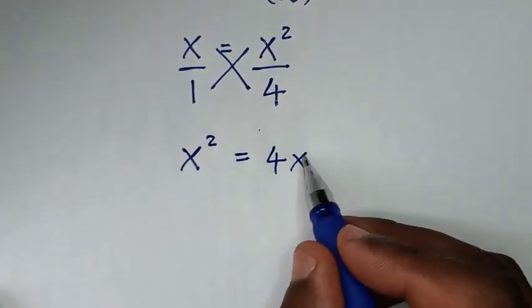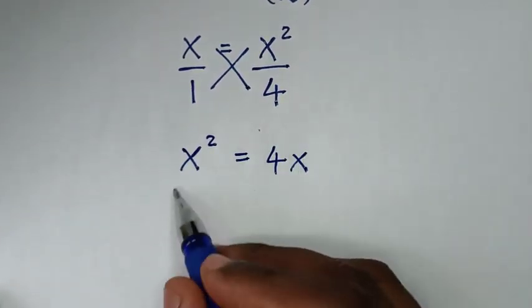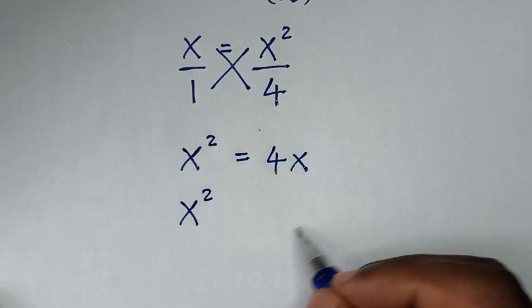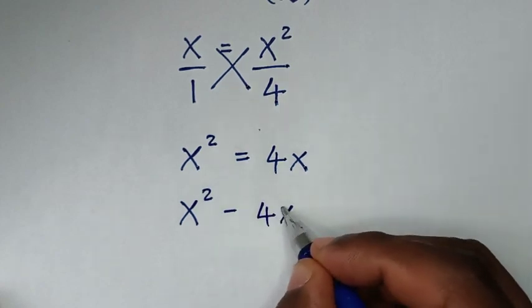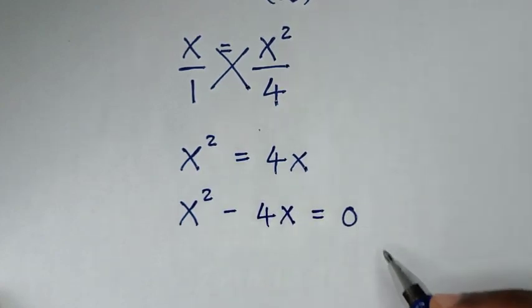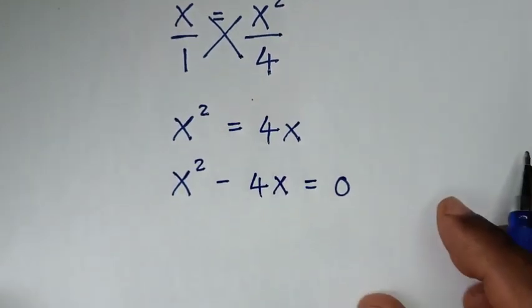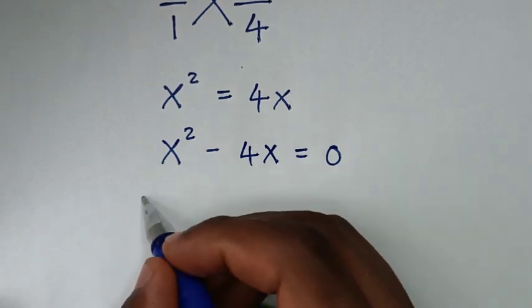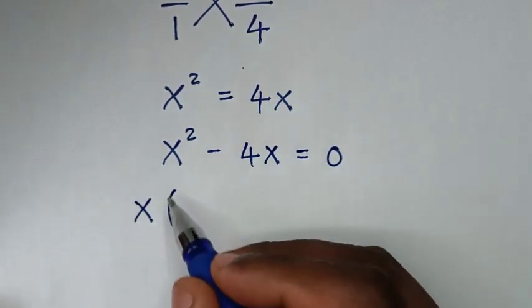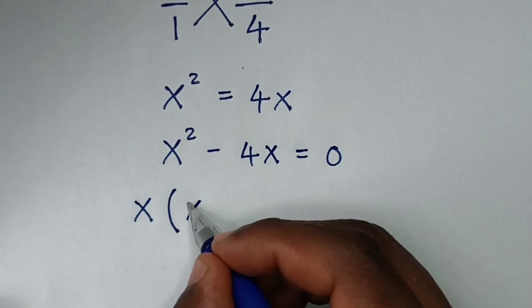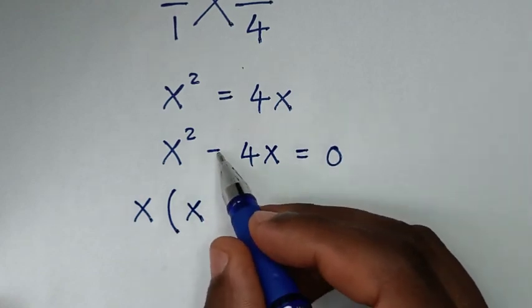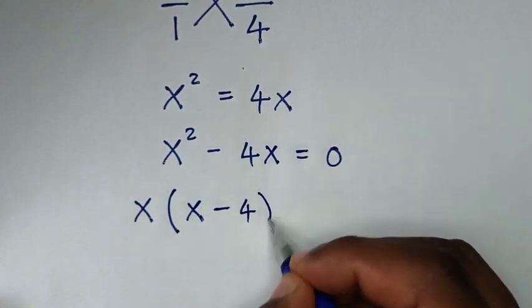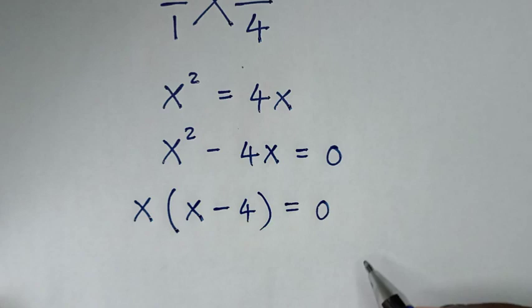Then we'll take 4x to the left side, so it will be x squared minus 4x is equal to 0. From here, x is common, so we'll take x out of the bracket: x times (x minus 4) is equal to 0.